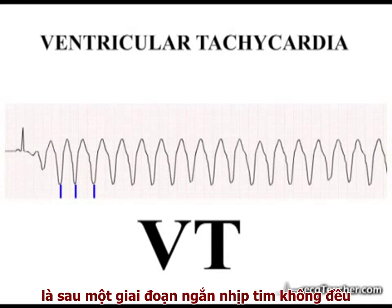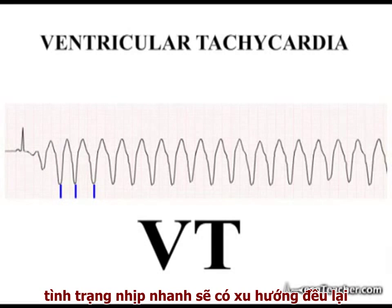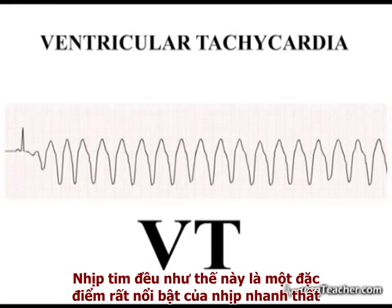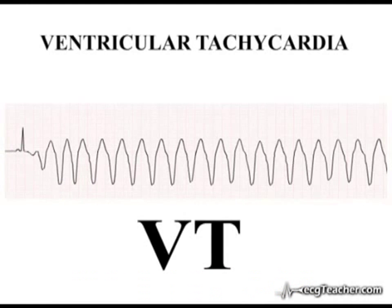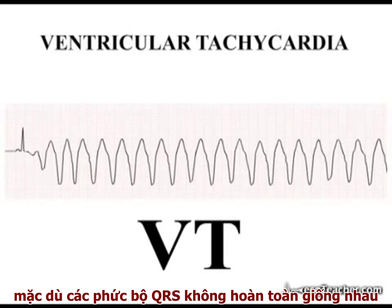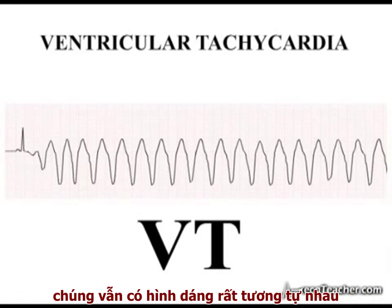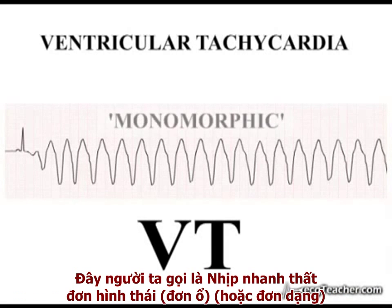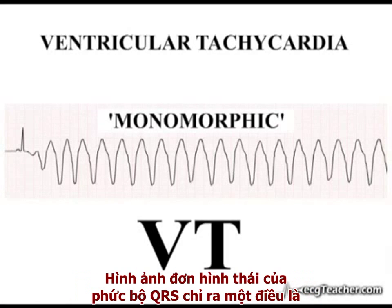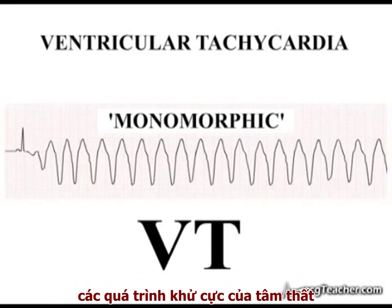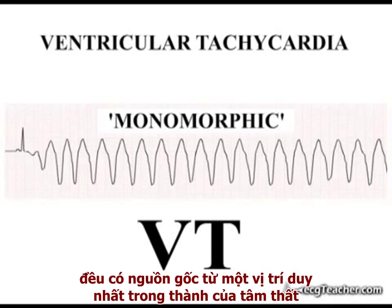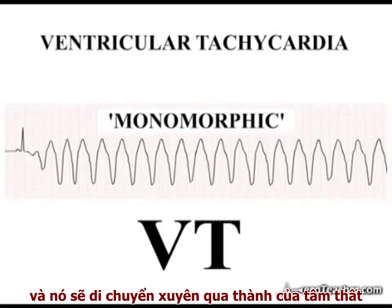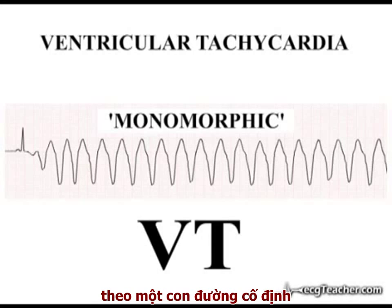You will also appreciate that following an initial brief period of irregularity, the tachyarrhythmia is monotonously regular. This regularity is a very characteristic feature of ventricular tachycardia. In our patient's case, although not completely identical, the QRS complexes are very similar in morphology — this is a monomorphic ventricular tachycardia. The monomorphic morphology of the QRS complexes indicates that each episode of ventricular depolarization is originating from one single site within the chambers and is moving through the ventricular myocardium in a constant pattern.